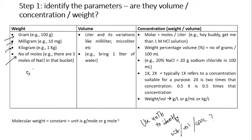For example, five moles of sodium chloride, five micromoles, or five picomoles — these are all weight units. Volume, on the other hand, is predominantly represented by liters and its variations: milliliter, microliter, nanoliter.